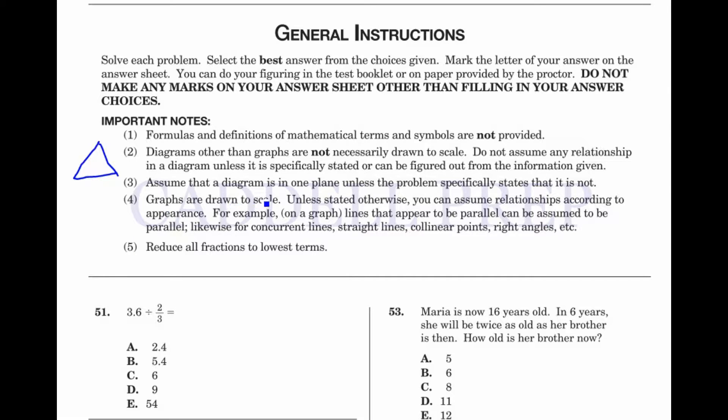Graphs are drawn to scale. Okay, that's important. Graphs are drawn to scale. Unless stated otherwise, you can assume relationships according to appearance. For example, on a graph, lines that appear to be parallel can be assumed to be parallel.